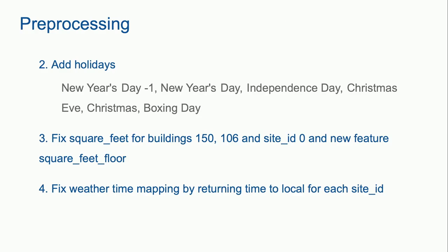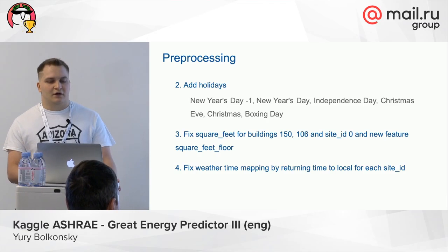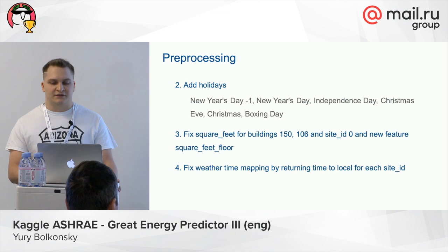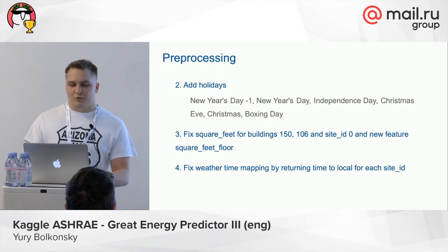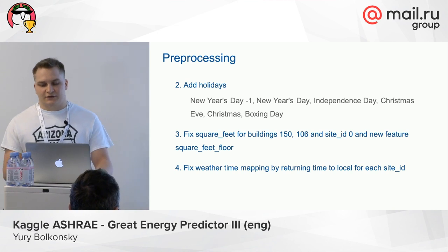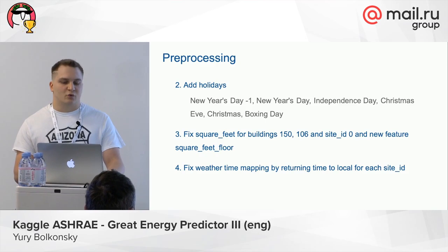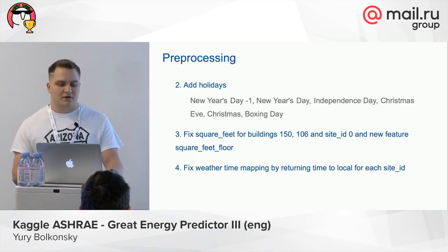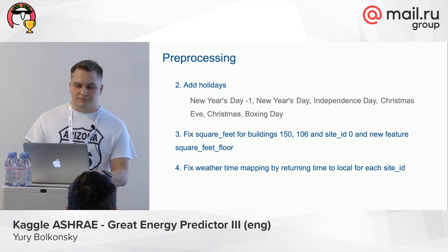The second step of pre-processing was adding holidays. Because we had timestamps, we could connect them to American holidays such as New Year, the day before New Year, Independence Day, Christmas Day, and Boxing Day. Also, we fixed square feet for some buildings, like buildings 150 and 106, and for site 0, and added a new feature: square feet per floor. For some buildings the square footage was in different units, so we needed to normalize them.